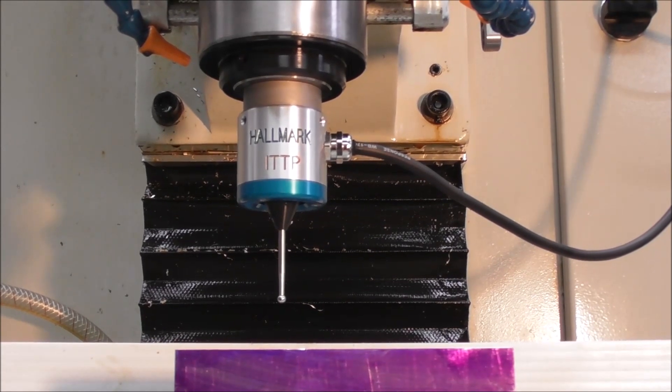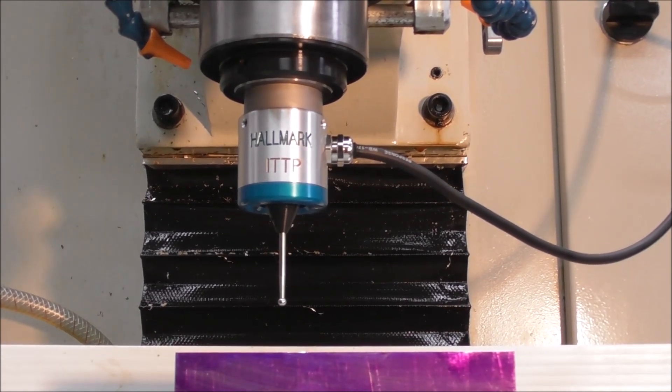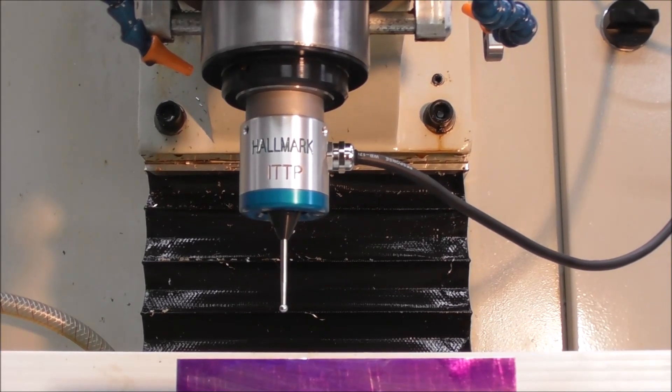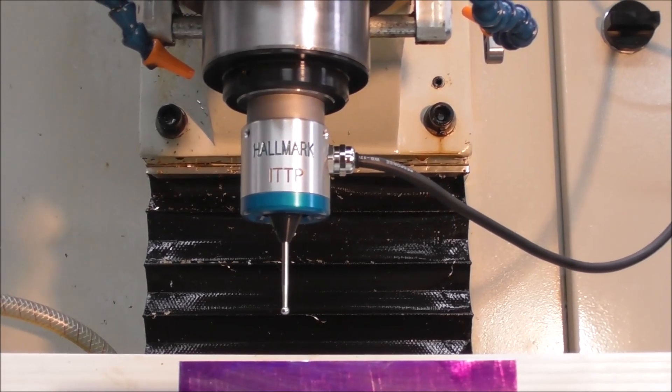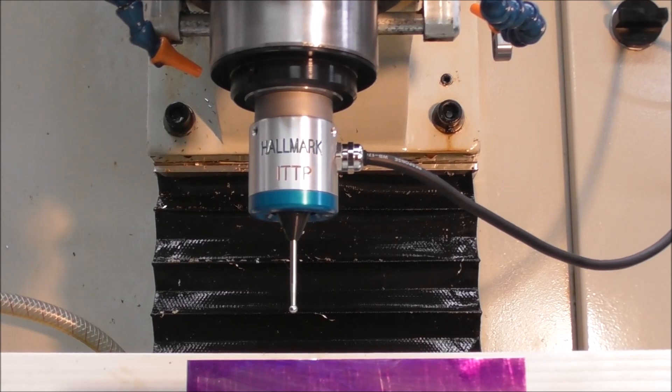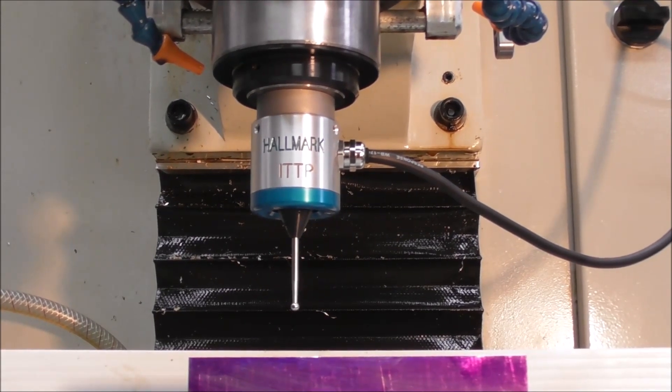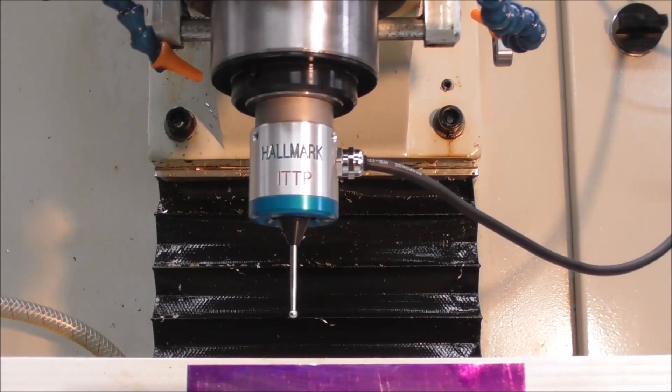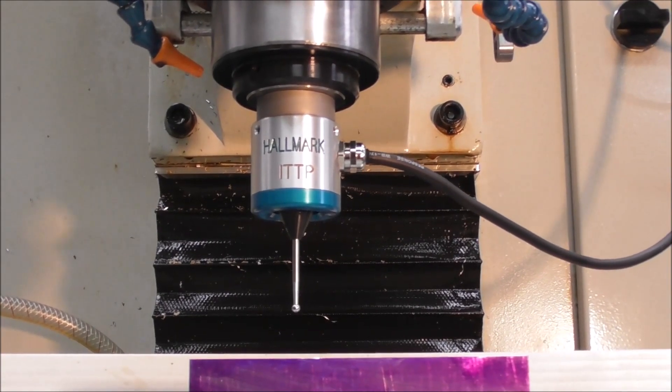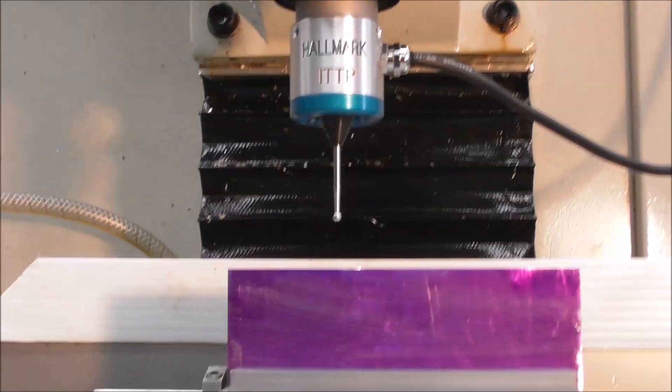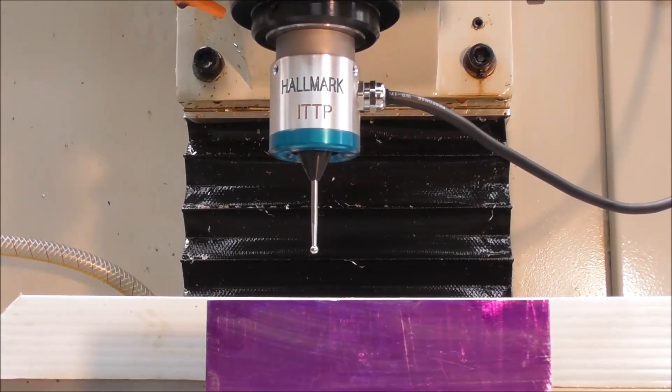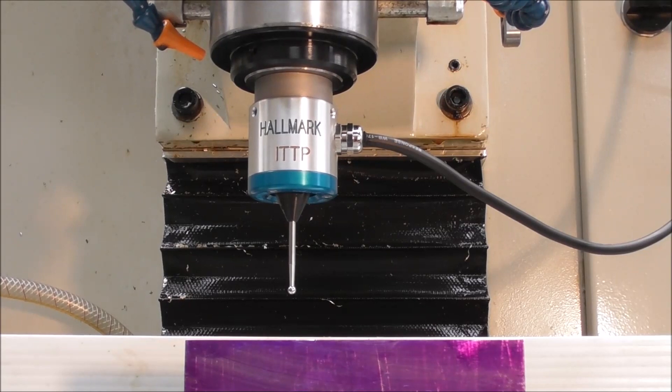With this type of retract probe, you don't have the same requirement, so you can have a stiff, strong stylus. You don't need to protect the delicate internals because you've got retraction for protection. You get less pre-travel because you have less flex, less pre-travel variation.